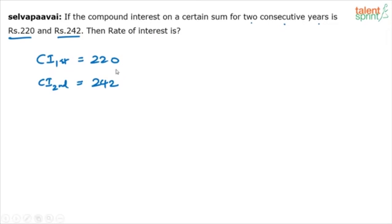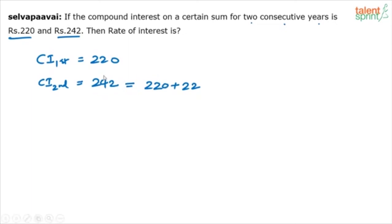If it is first year and second year — first year 220, second year 242 — this 242 can be split as 220 plus 22. Why are we breaking it as 220 plus 22? Because the interest earned in the first year is 220, and the interest in the second year will also be 220 plus something extra.